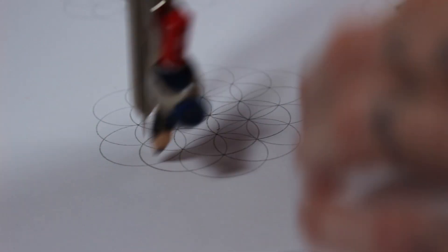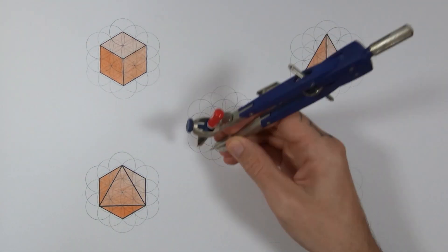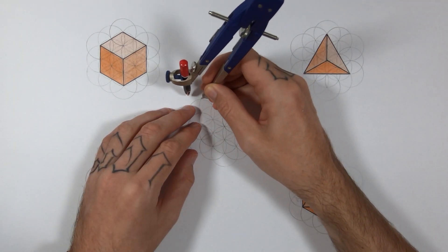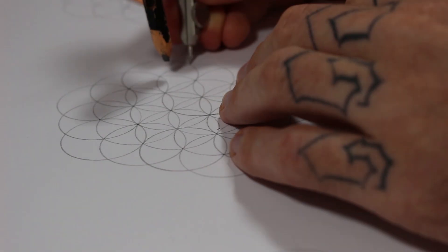This is the same as all the other flower of lives we did. If you go around twice more, two more rows, you've got 61 circles.